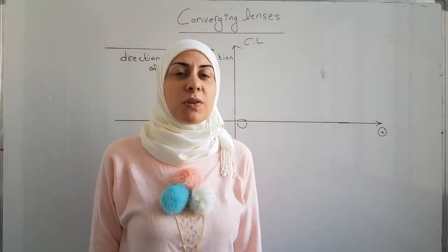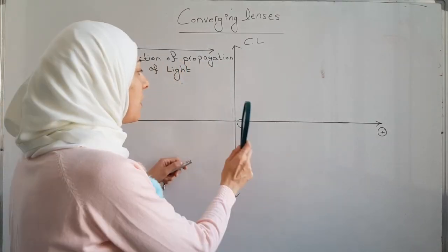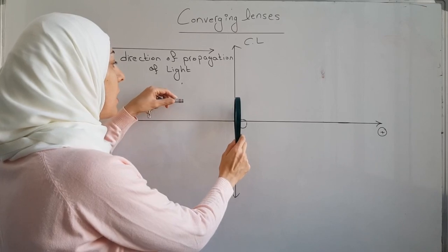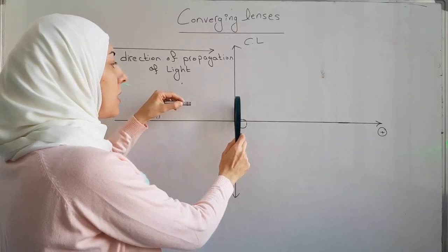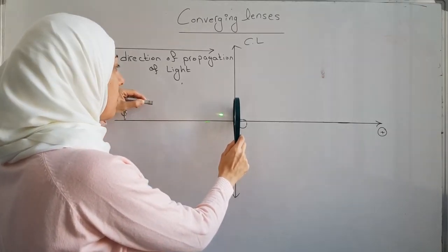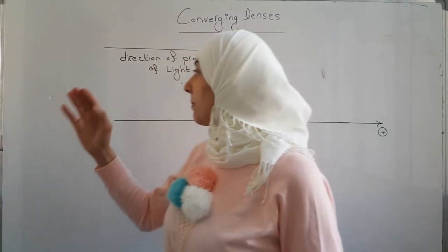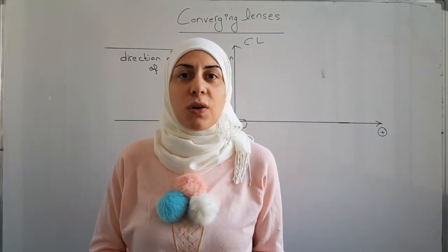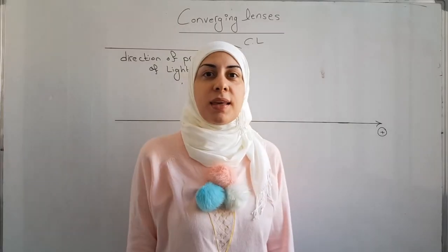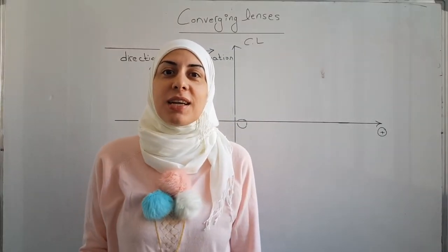By the direction of propagation of light we mean that if we put the lens like this and the laser source or any source of light is directed from left to right, we usually put the direction of propagation of light from left to right as the direction of writing in English.